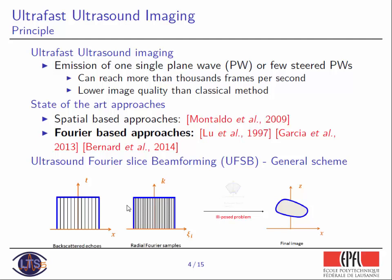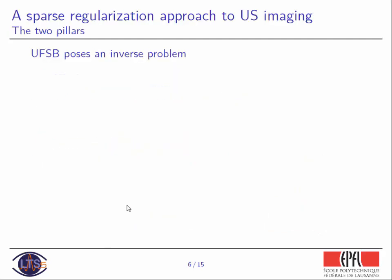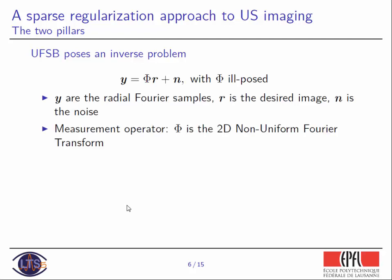From these radial Fourier samples, what we want is to recover the desired image. The problem is that this problem is ill-posed, so there is a formulation but it's hard to invert the function that links these two entities. There exist some methods that use an approximation of the inverse operator, but that leads to artifacts. That's why we introduce our method. Our method is based on two pillars. The first is that Ultrasound Fourier Slice Beamforming poses an inverse problem — we can relate our radial Fourier samples to the desired image by an operator Φ, but this operator is ill-posed, so we cannot directly apply Φ⁻¹. The usual way to deal with such problems is to regularize, introducing sparse priors onto the desired image.